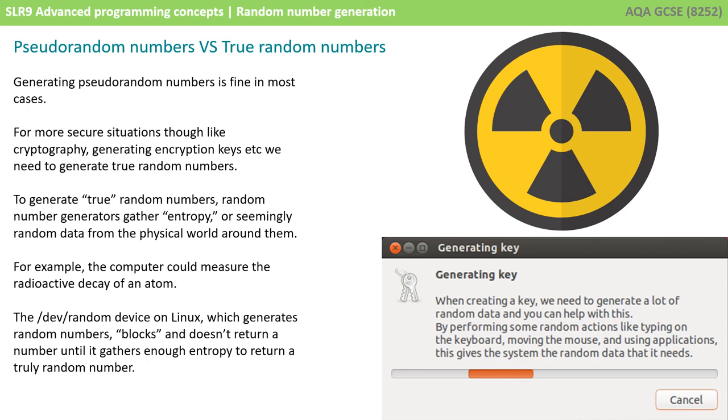When creating your key, we need to generate a lot of random data. Please perform some random actions, like typing on the keyboard or moving the mouse. There is no way the random number algorithm can predict exactly when you will type keys, the distance between them, the timing, which keys you'll press. Your performance is random. It can analyze this data and feed it into its algorithm to generate a truly random number.